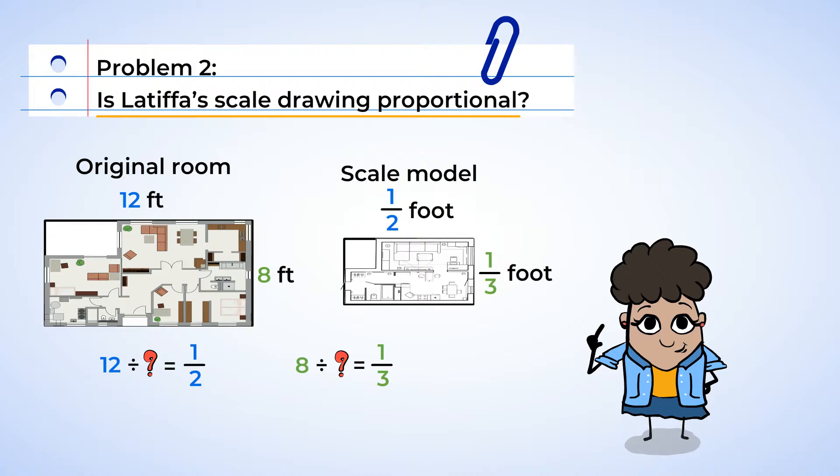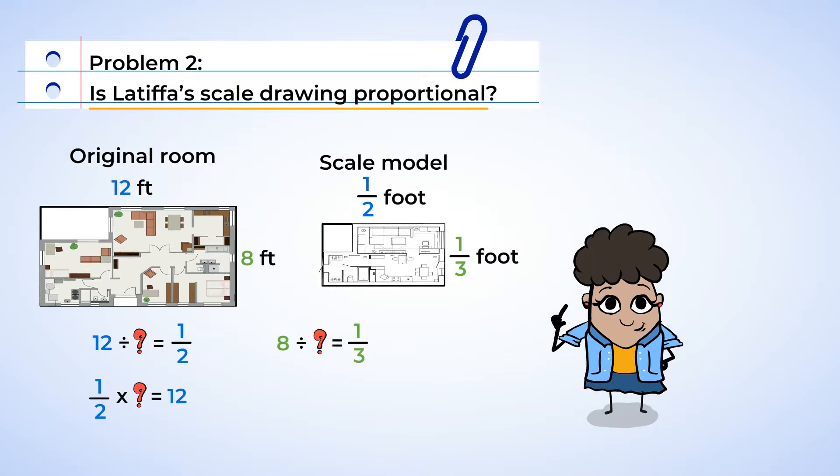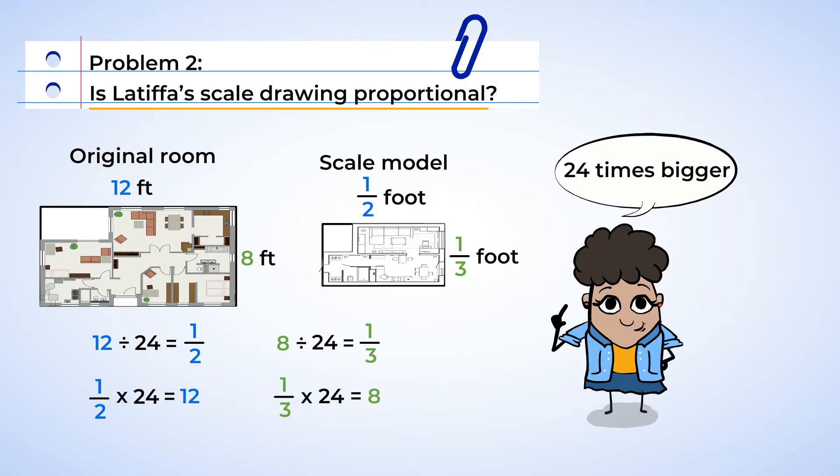Hmm. 12 divided by what is equal to 1 half? Or, 1 half times what is equal to 12? 24! Well, it also turns out that 8 divided by 24 is 1 third. The ratio for the widths and the lengths are both the same. So, this means that the scale drawing is proportional to the original building. The original building is 24 times bigger than the scale.